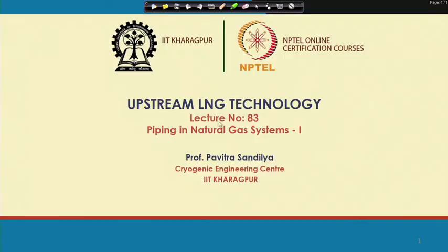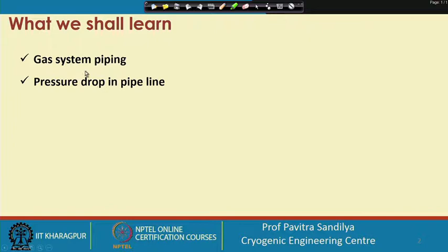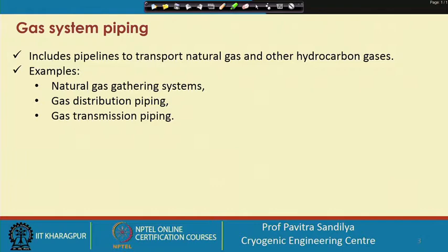In this lecture we shall be looking into pressure drop calculations in pipelines in natural gas systems. We shall be studying piping in natural gas systems and looking into the various piping systems and the pressure drop in the pipeline. This includes pipings used for transportation of natural gas and other hydrocarbon gases like LPG — examples are natural gas gathering systems, gas distribution piping, and gas transmission piping.